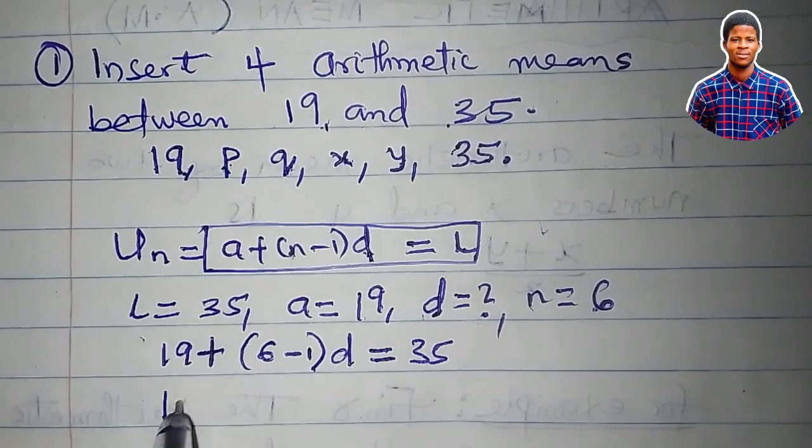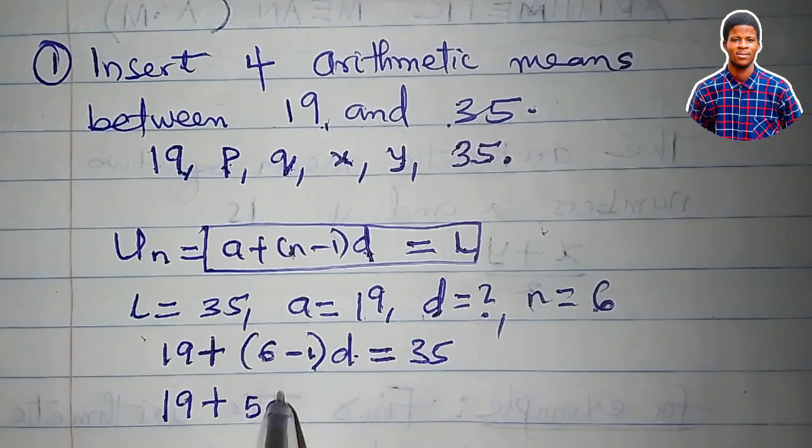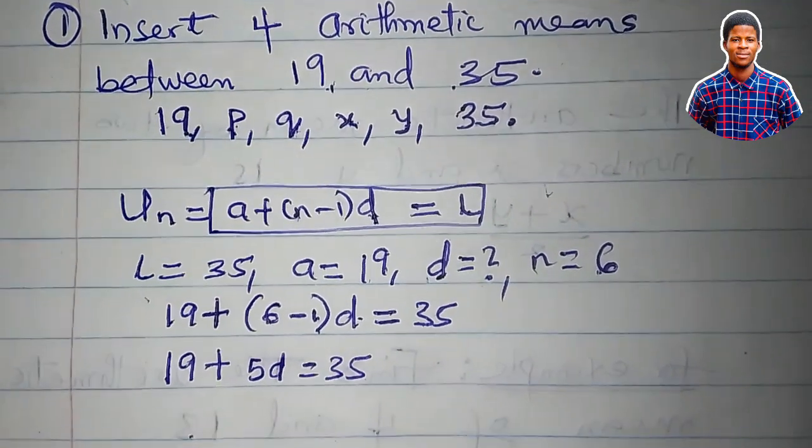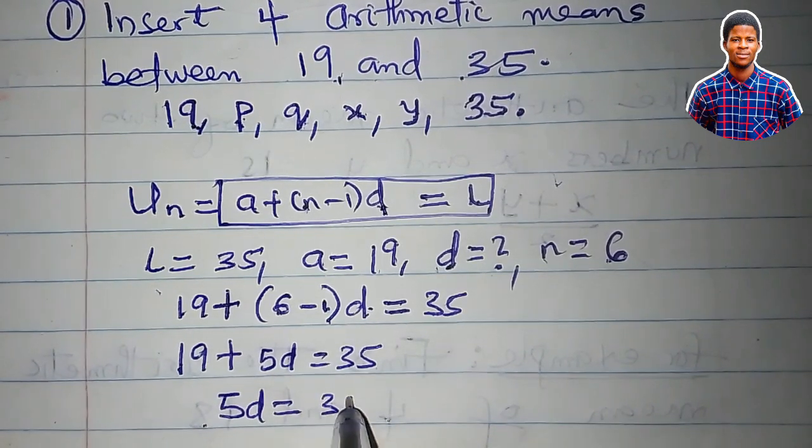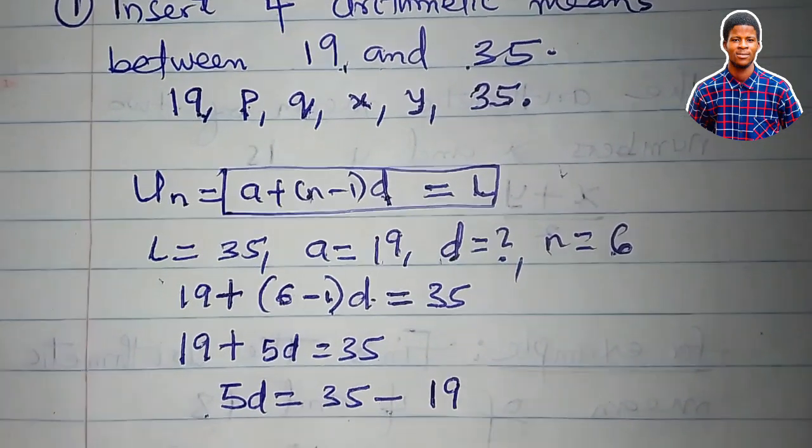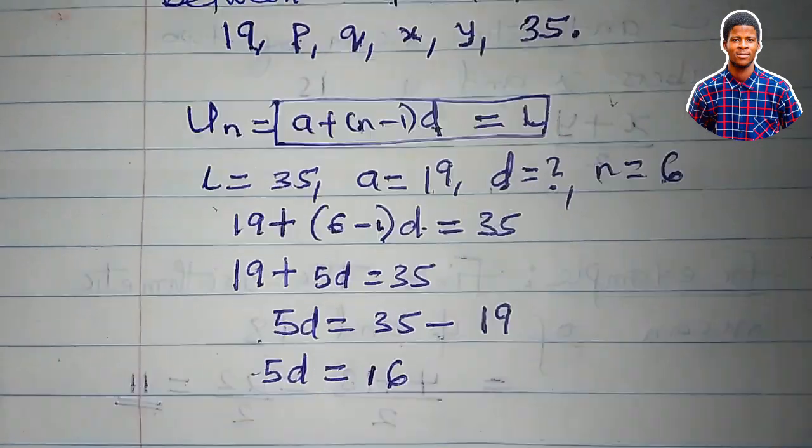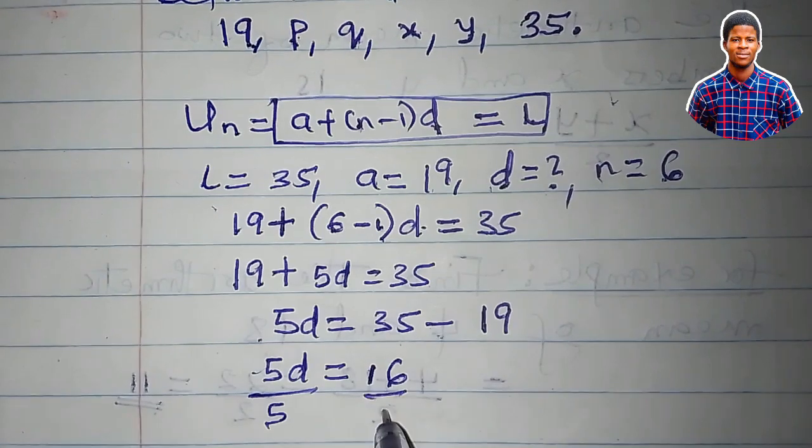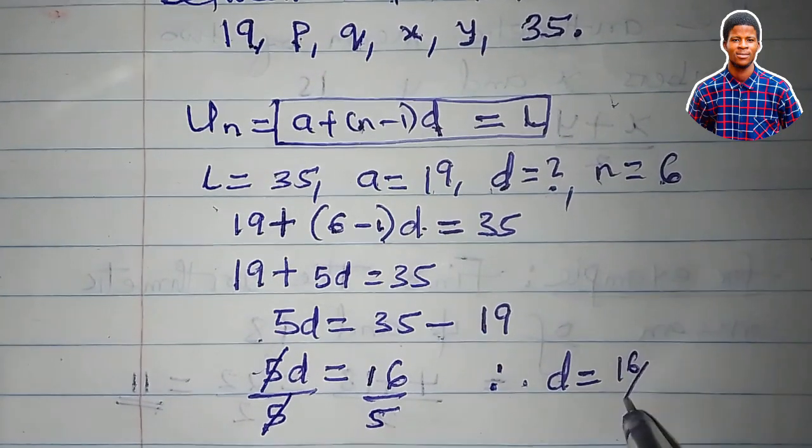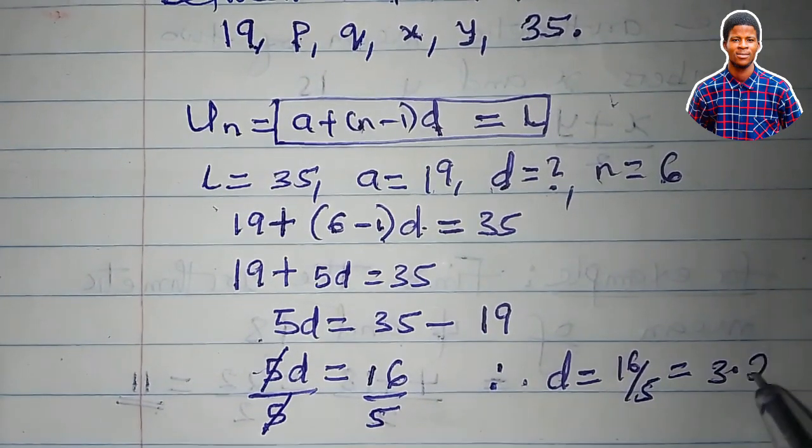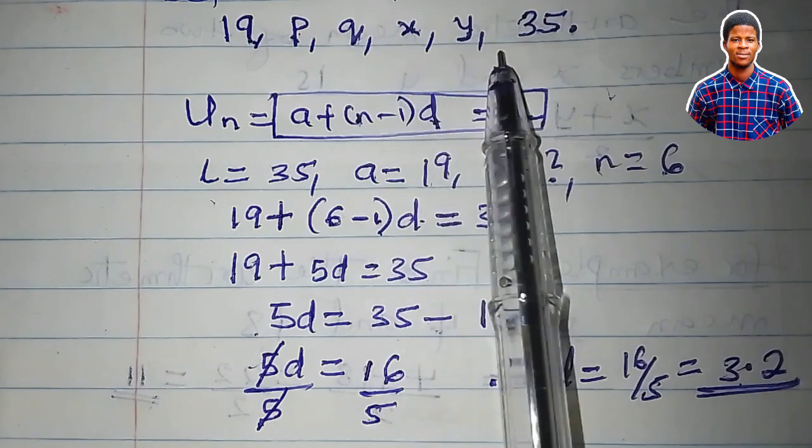A is 19 plus n is 6. We are looking for the common difference, that is D, which is equal to L, which is the last term, and that is 35. We have 19 plus 6 minus 1 is 5, 5 times D is 5D. We have to collect like terms. 5D will be equal to 35. 19 will cross and turn to a minus, and we have 5D equal to 35 minus 19 is 16. Dividing both sides by 5, 5 cancels 5, therefore D is equal to 16 over 5, and that is equal to 3.2.